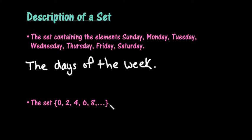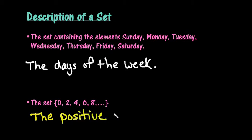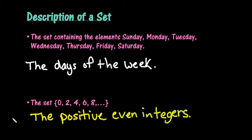This is known as an infinite set. So with this one we can see that this is all of the positive even integers. So the description of this set would be the positive even integers. It starts at 0, which is the first positive even integer, and it continues forever and ever. So the description of a set is just describing what is contained in the set.